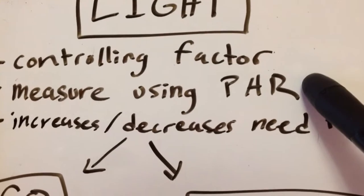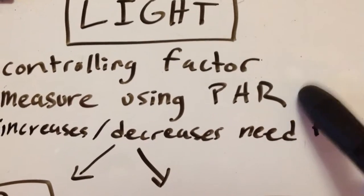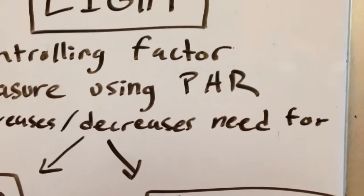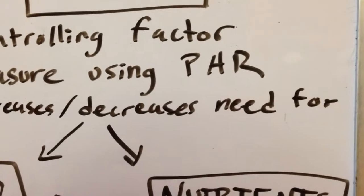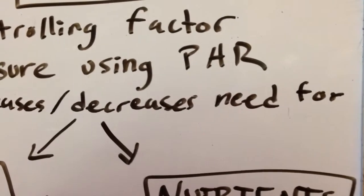I always use PAR ratings to measure what light you're going to need, just because I think it's one of the more accurate ways compared to some of the older methods, like watts per gallon.